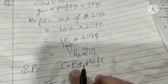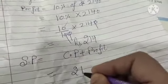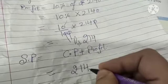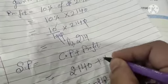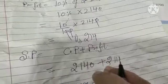10% into this one. Cost price plus profit. Cost price is 2140 rupees, profit is 214 rupees. Now we will get 10% of the 2140 rupees. Selling price is given.